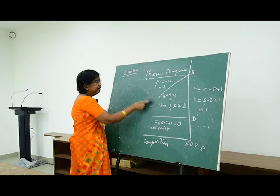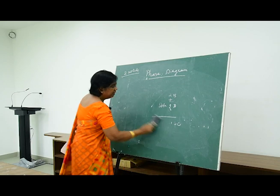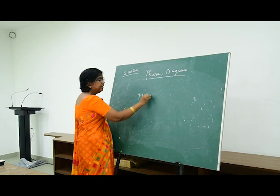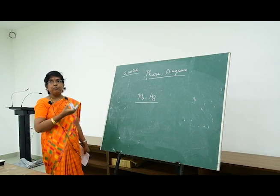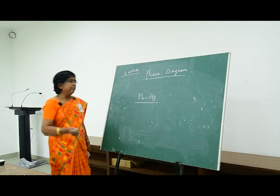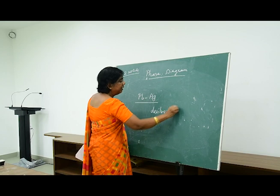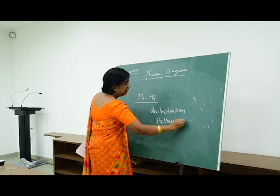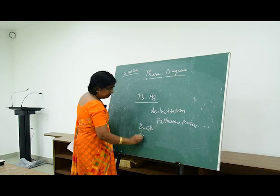This simple eutectic system is useful in the isolation of pure metals. One example is the lead-silver system: when lead is obtained mixed with silver, you can use this eutectic system to remove the silver — this is called desilverization, and the process is known as the Pattinson process. Other examples include bismuth-cadmium and KCl-water systems, all two-component systems.